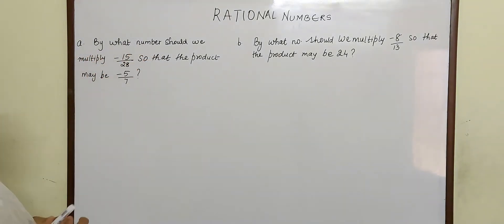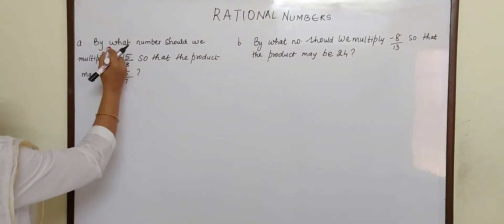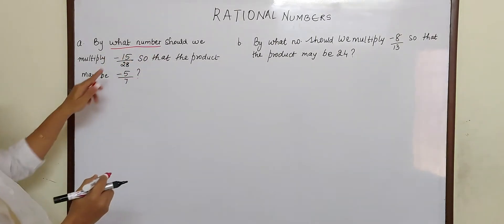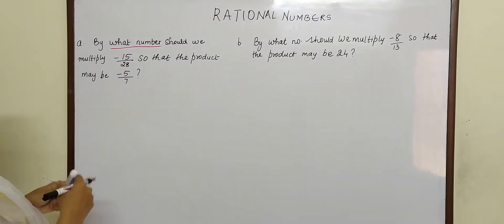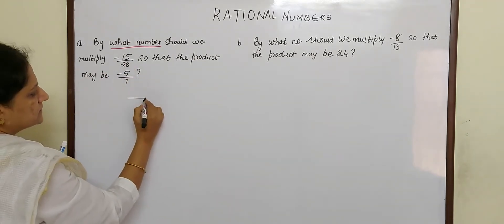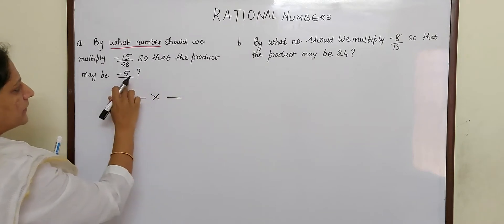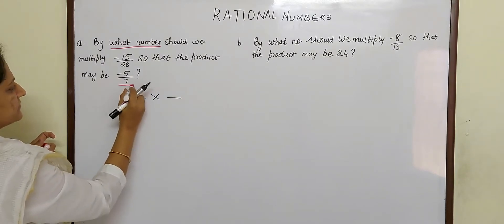By what number should we multiply -15/28 so that the product may be -5/7? So now they have asked by what number should we multiply this. So we know there are two numbers given and the product is -5/7.